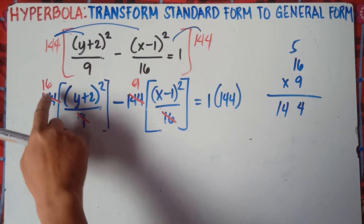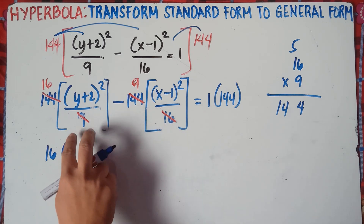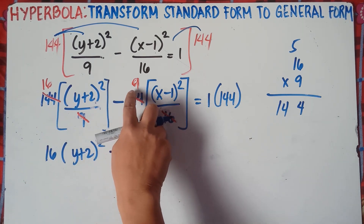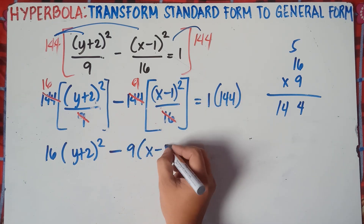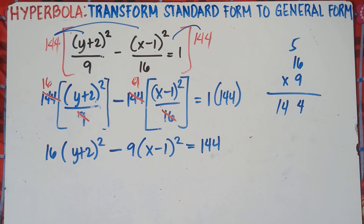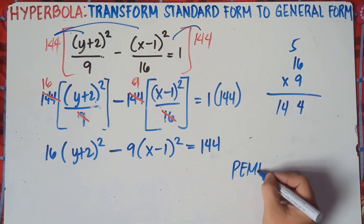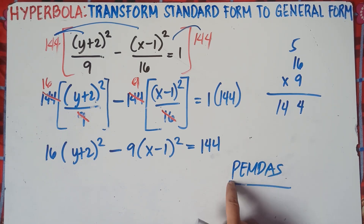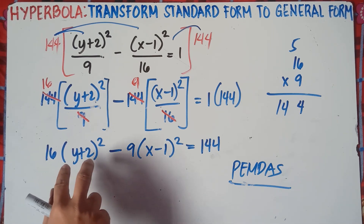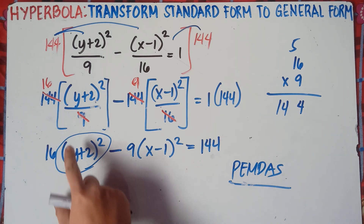After that, you multiply. So this becomes 16 times (y+2) squared, minus 9 times (x-1) squared, equals 144. But do not multiply 16 into the expression yet. Why? Because you need to follow PEMDAS — parentheses and exponents come before multiplication. Simplify the squared terms first, before multiplying by 16 or 9.